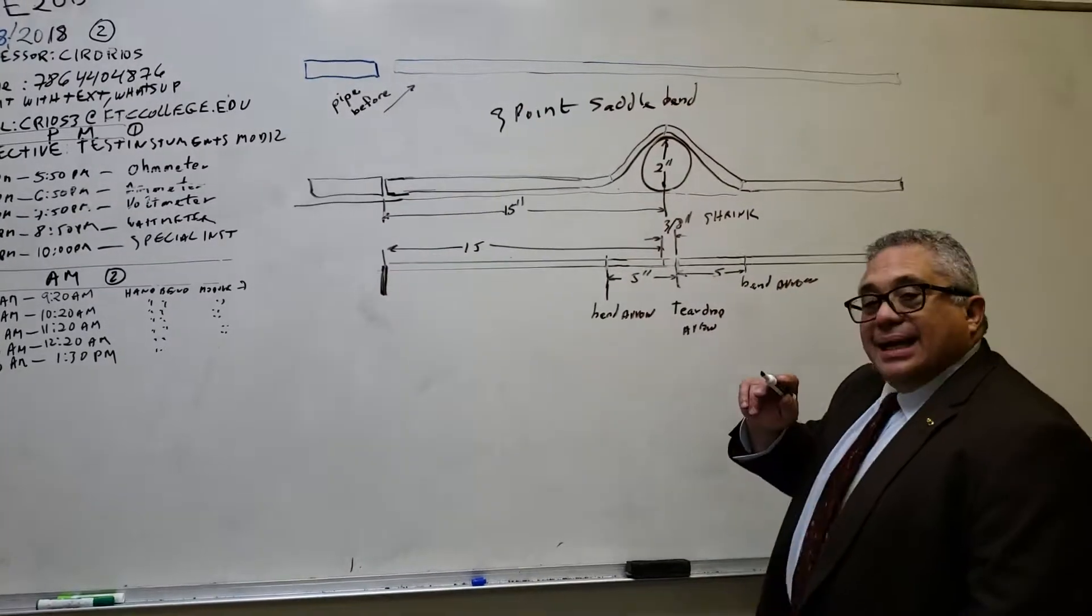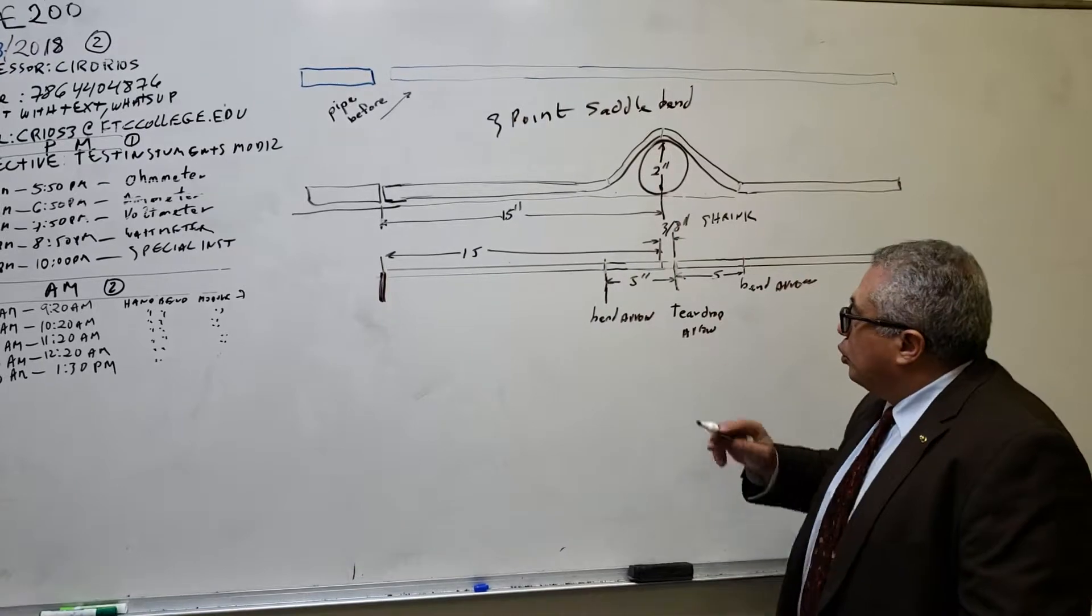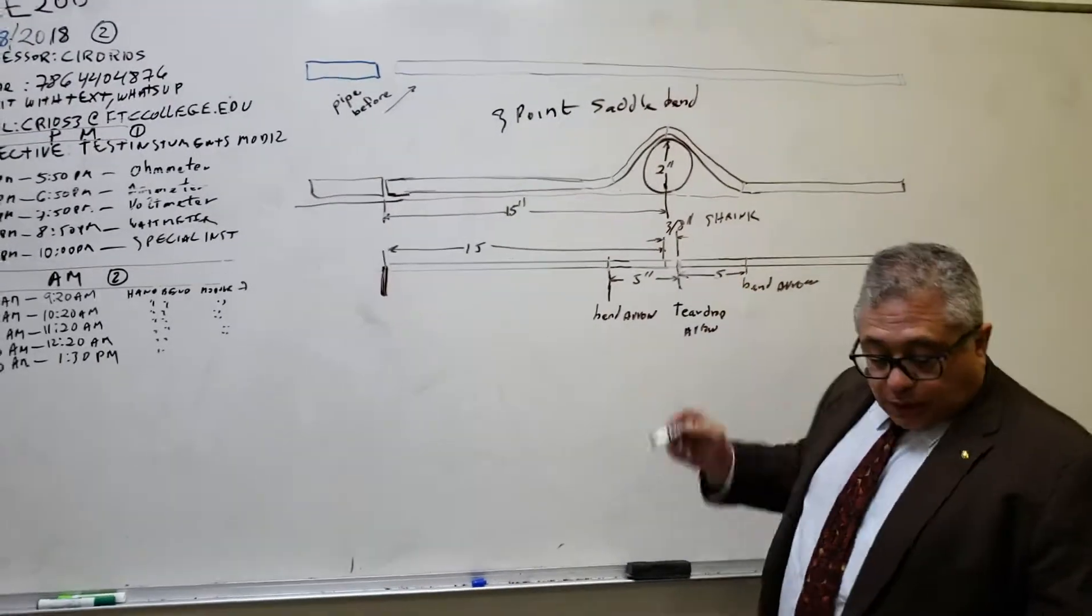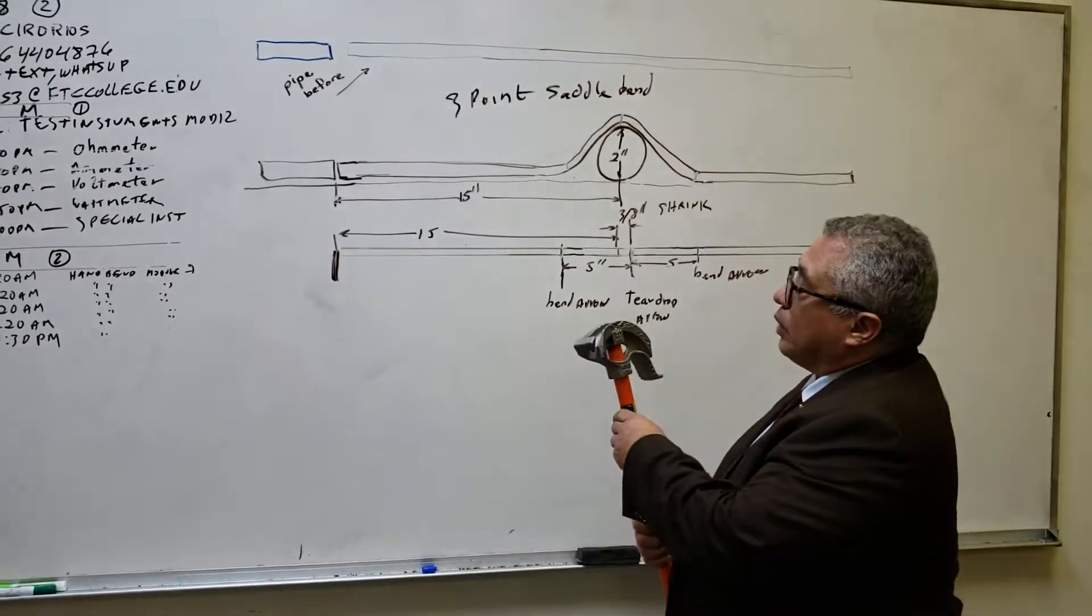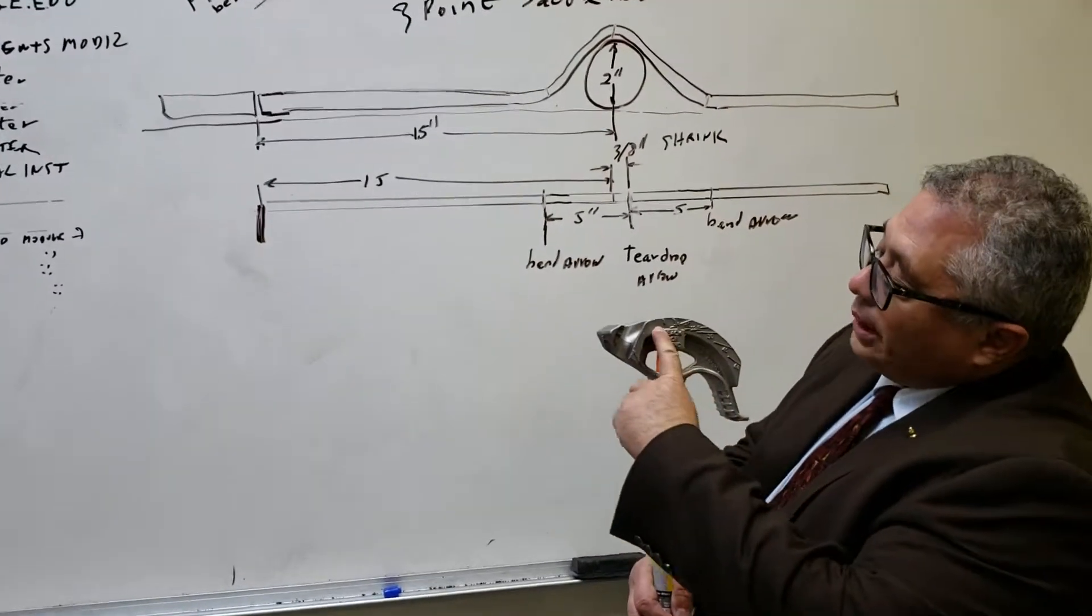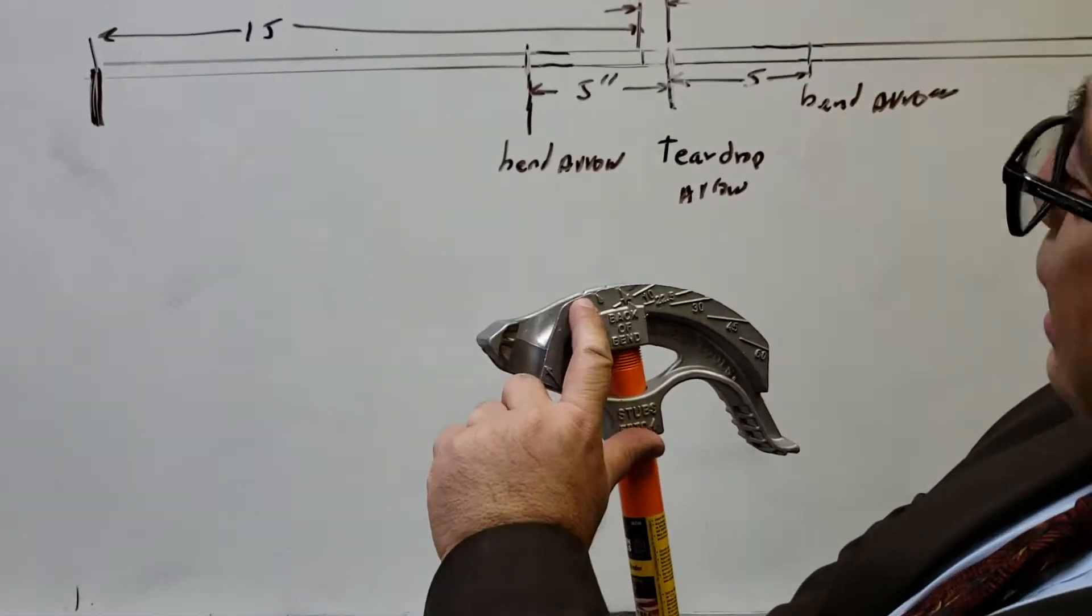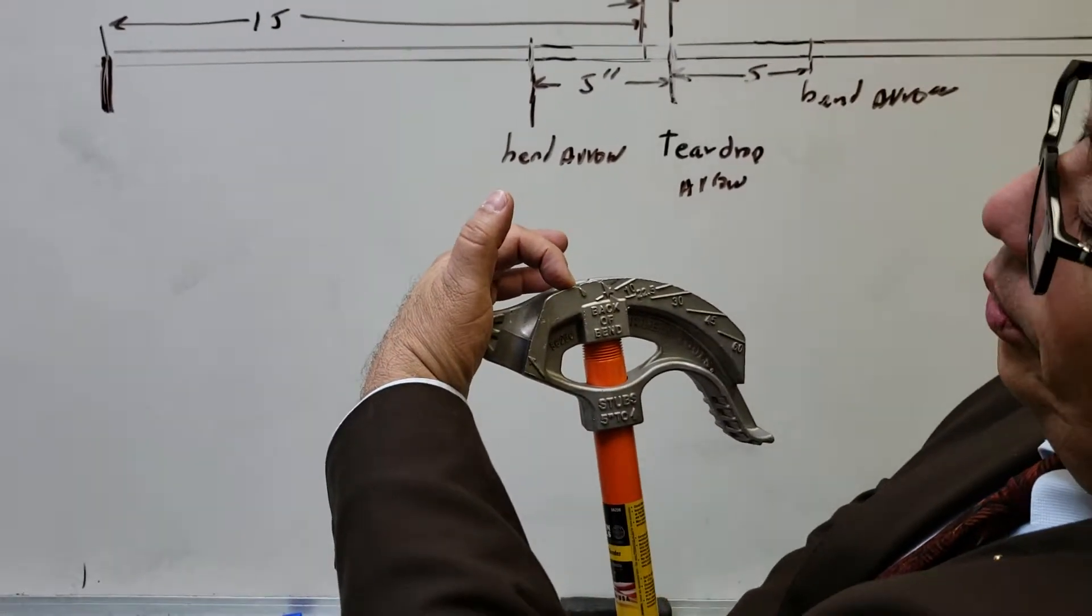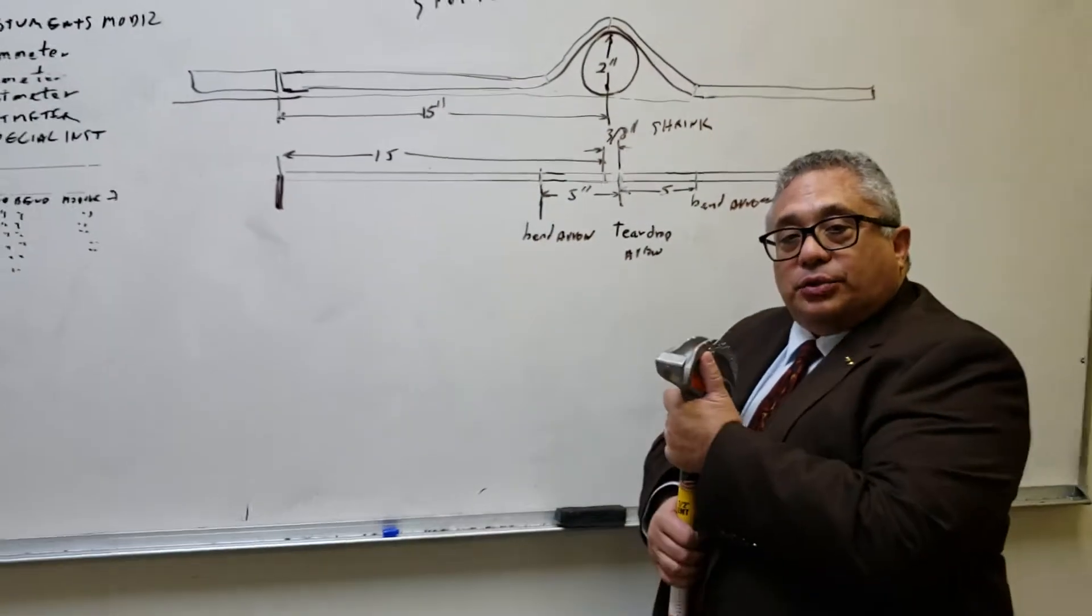One more detail. In order to bend this pipe, this conduit, the first thing you need to do is to bend the center mark. At the center mark, you bend 45 degrees with the back of bent arrow. No, it's not the back of bent arrow, it's called a tear drop arrow. This one that is over here. Tear drop arrow. That happens to be the center of that 45 degree bend.